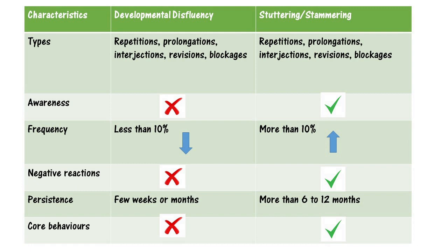Children with developmental disfluencies may show no core behaviors, whereas children with stuttering may be reacting to the disfluencies. They may show core behaviors like blinking or closing their eyes, looking to the side, or exhibiting tension in their mouths when stuttering. These are the key differences you can notice when comparing developmental disfluencies and stuttering.